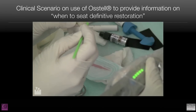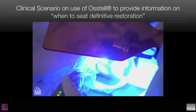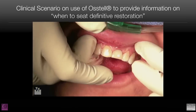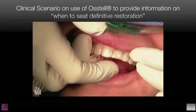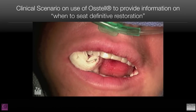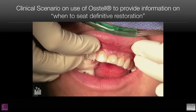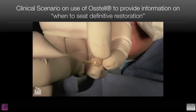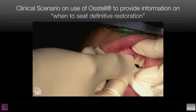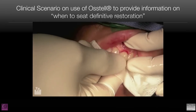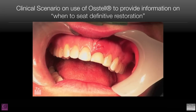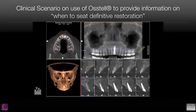This concept helps us deliver the one-abutment, one-time principle, where we can deliver the definitive prosthesis, allow our soft tissues to mold around the abutment, and provide the patient with adequate soft tissue contours. You see here, we're cementing the provisional restoration in place, taking care to avoid excess cement.